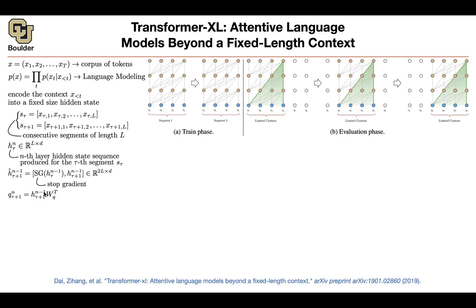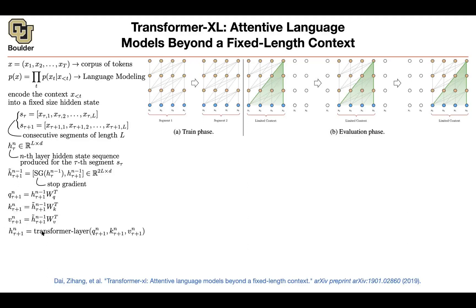You take H_{N-1, tau+1} — so you're in segment 2, and if N is 2, this is H2,1 — and multiply it by a query matrix. These are your weight matrices, otherwise there is nothing to learn. For the key and value, we take H-tilde, which has length 2L. Q is going to have length L. Now you do your attention: multiply query by key, do a softmax, then multiply by V. It's exactly your transformer layer.